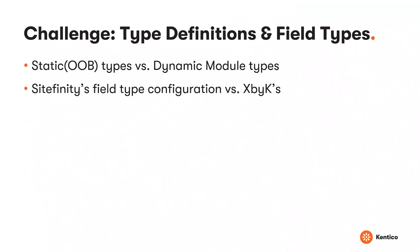Next up: type definitions and field types. Much like Kentico, Sitefinity has a concept of a content type with special fields — checkboxes, text boxes, whatever you need — and we need to bring those over to the XBK site. In Sitefinity, there are static or out-of-the-box types that are inside the code, not part of the database themselves, and we created some JSON files to handle those. There are also dynamic module types, which are your custom content types. The field type configuration handles it differently in terms of database column types and control types, so we had to migrate those over accordingly.